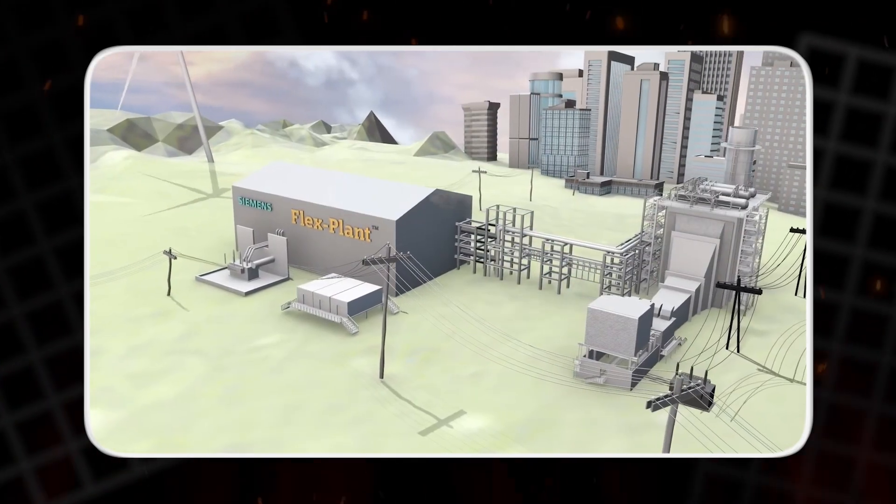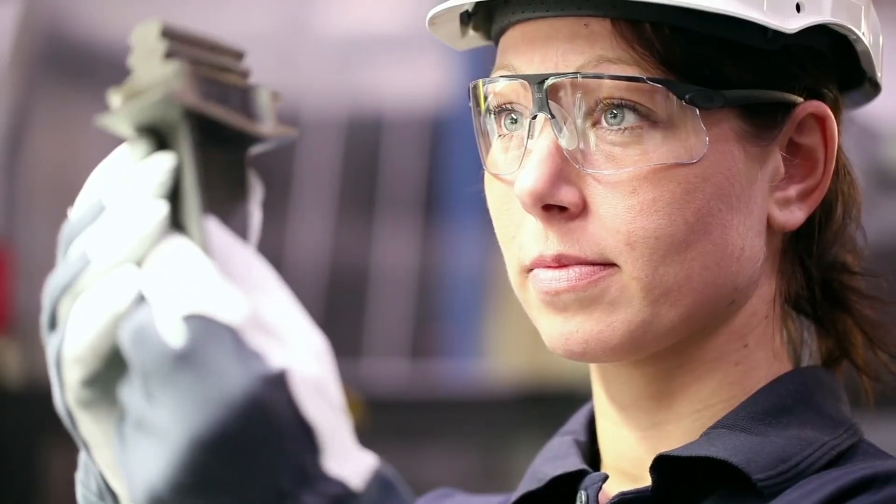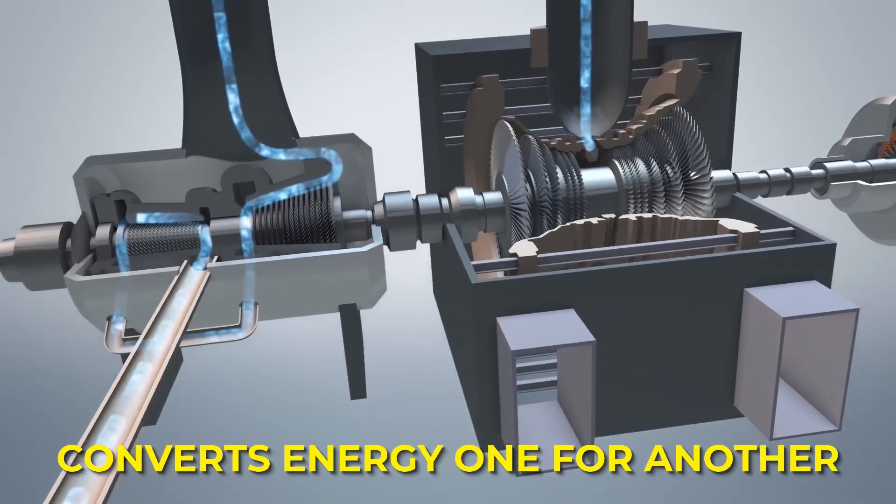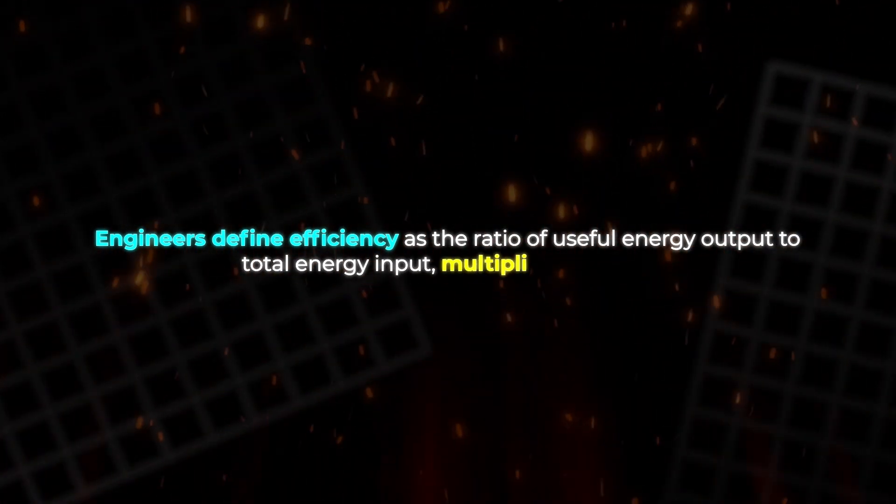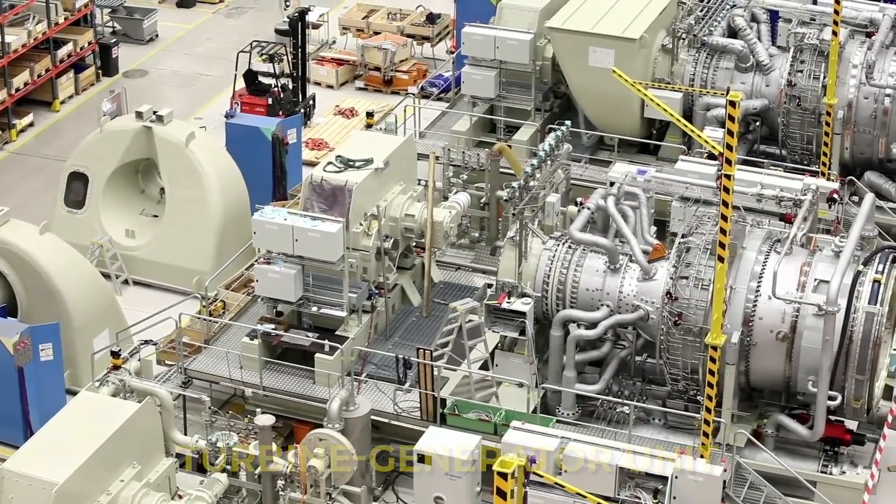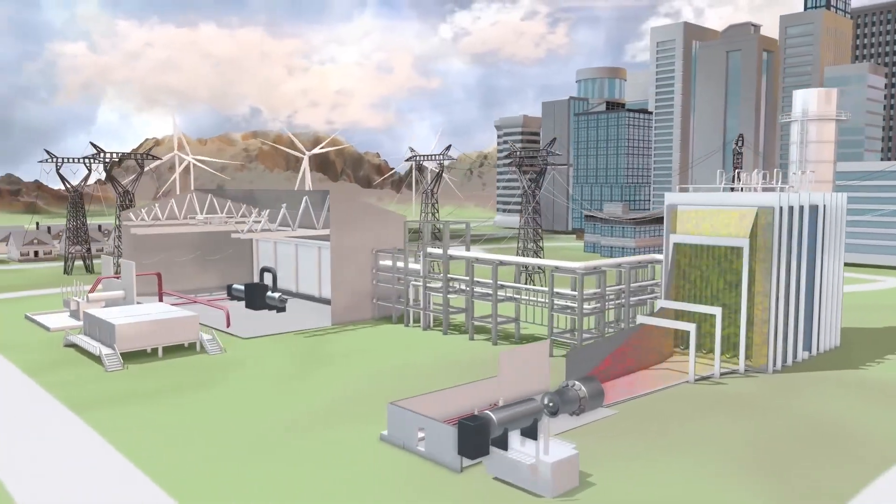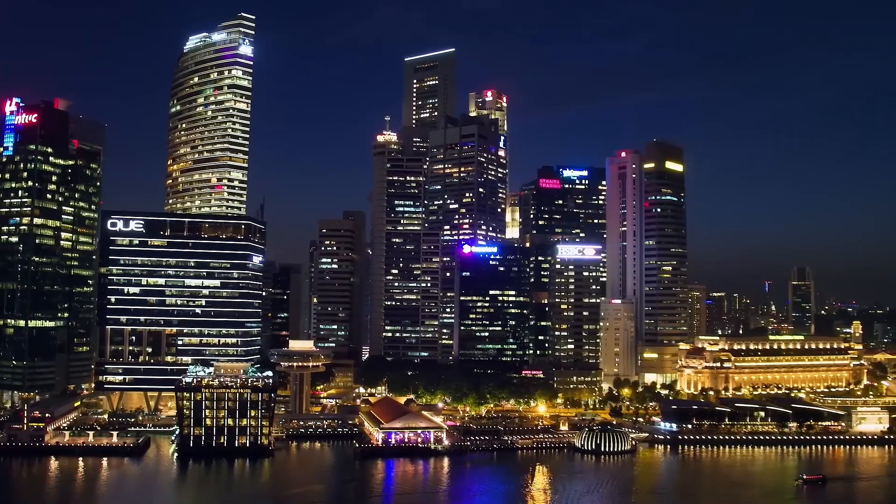The produced current is then fed into the power grid, lighting up homes, factories, and cities. When analyzing such a system, the most important metric is efficiency: how effectively it converts energy from one form to another. Engineers define efficiency as the ratio of useful energy output to total energy input, multiplied by 100%. In the case of a turbine generator unit, both the turbine and generator contribute to the final result. Their combined efficiencies determine how much of the original fuel energy becomes usable electricity.